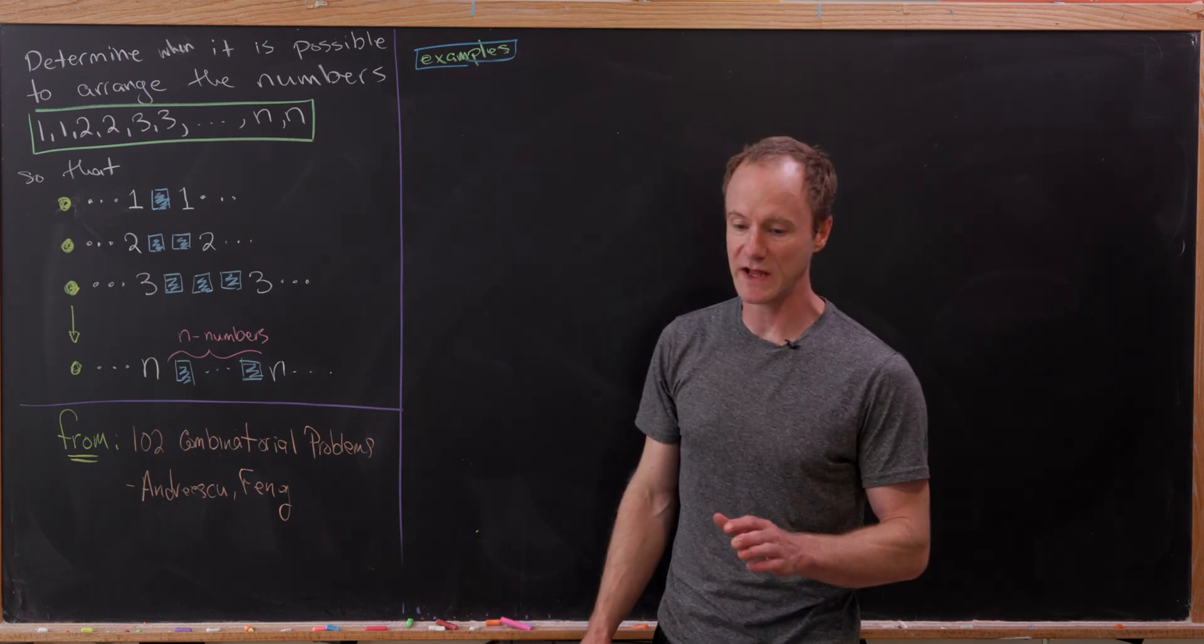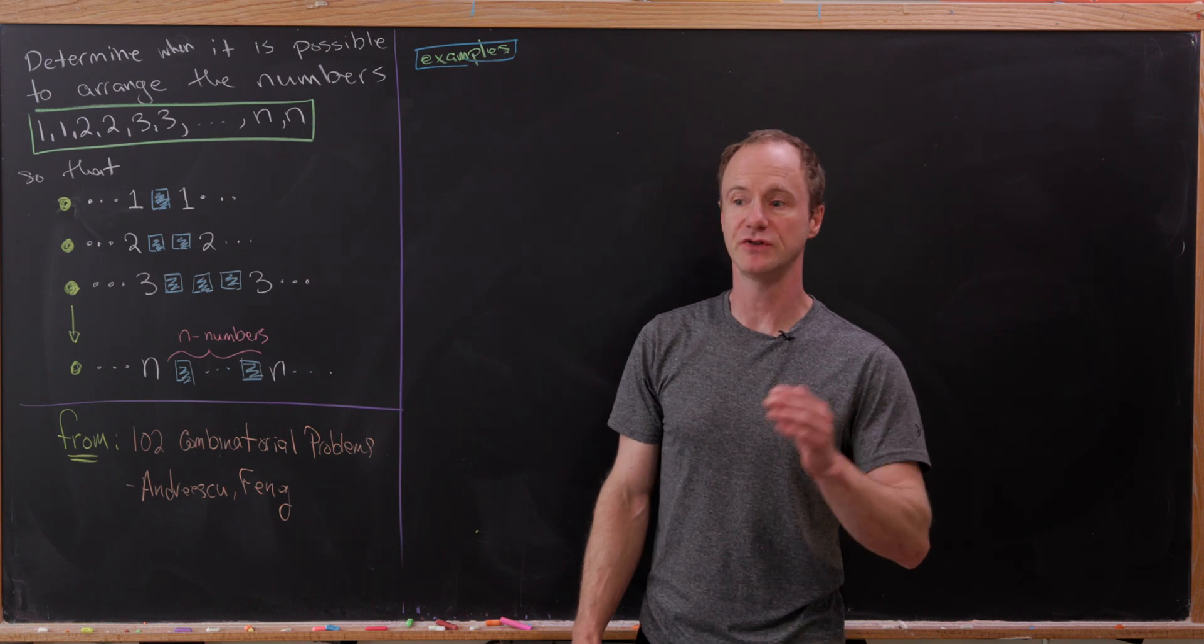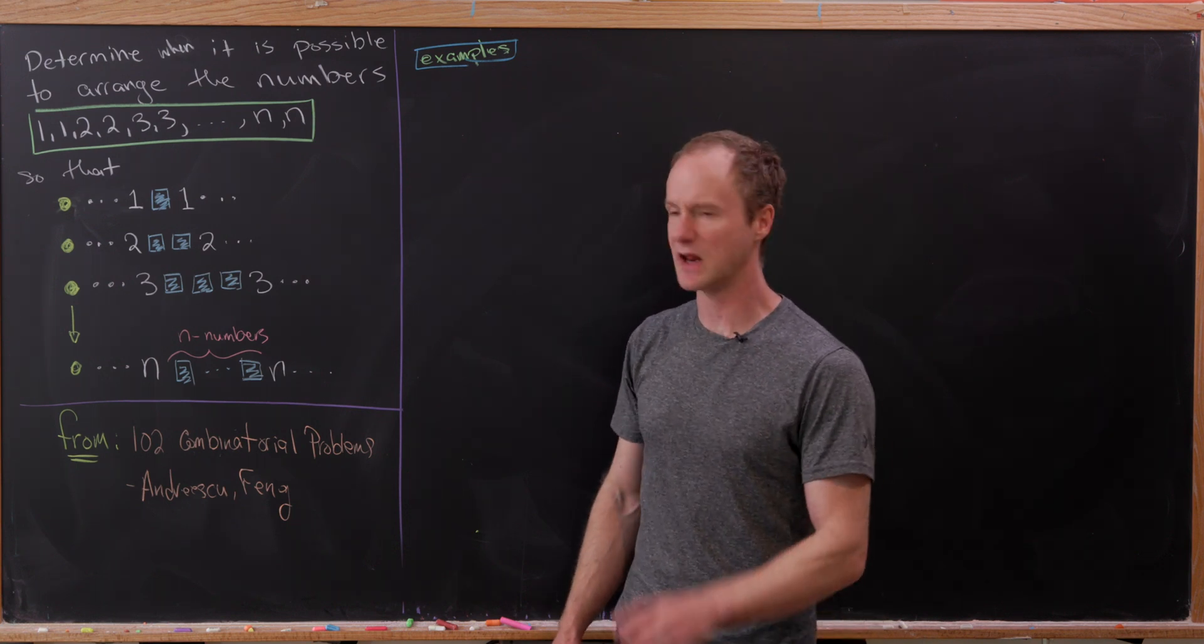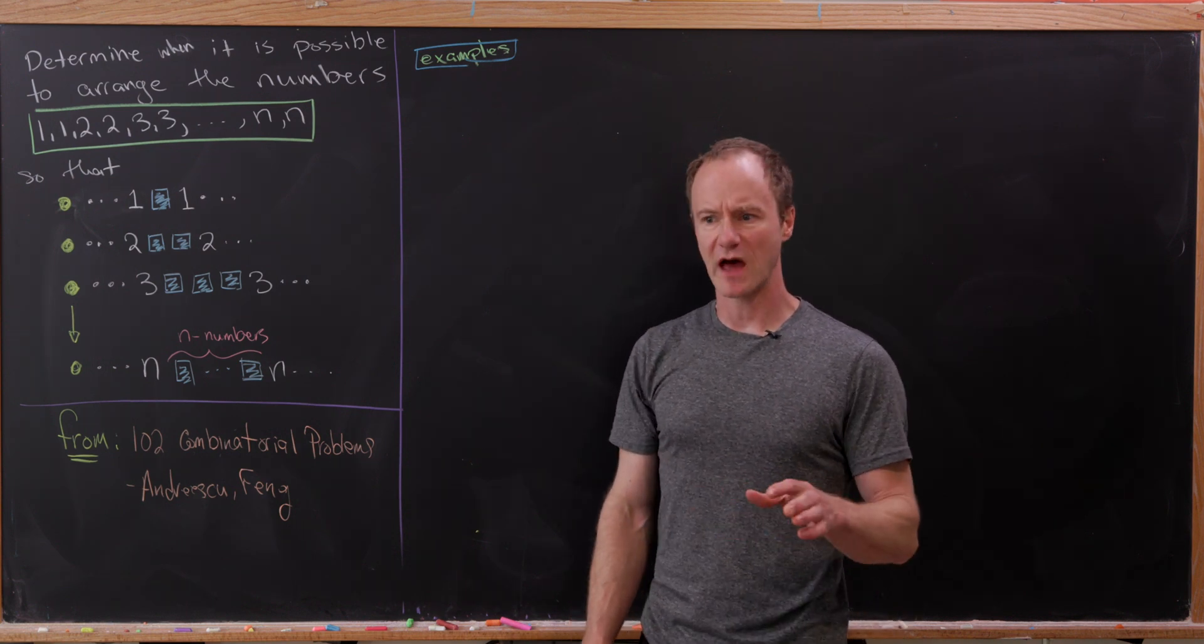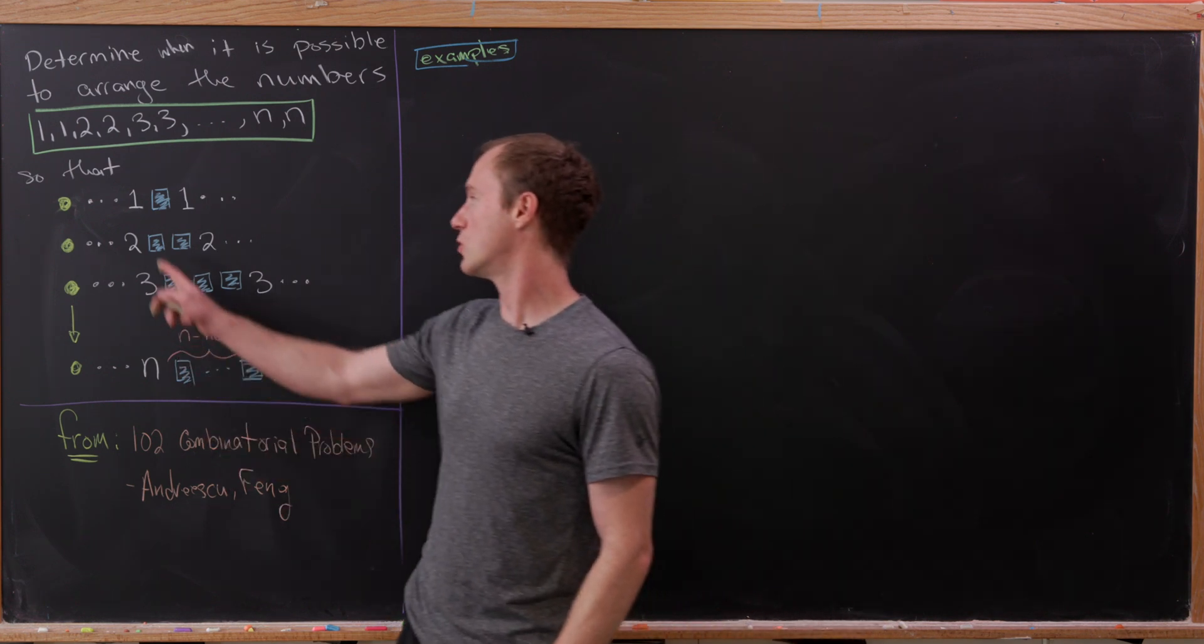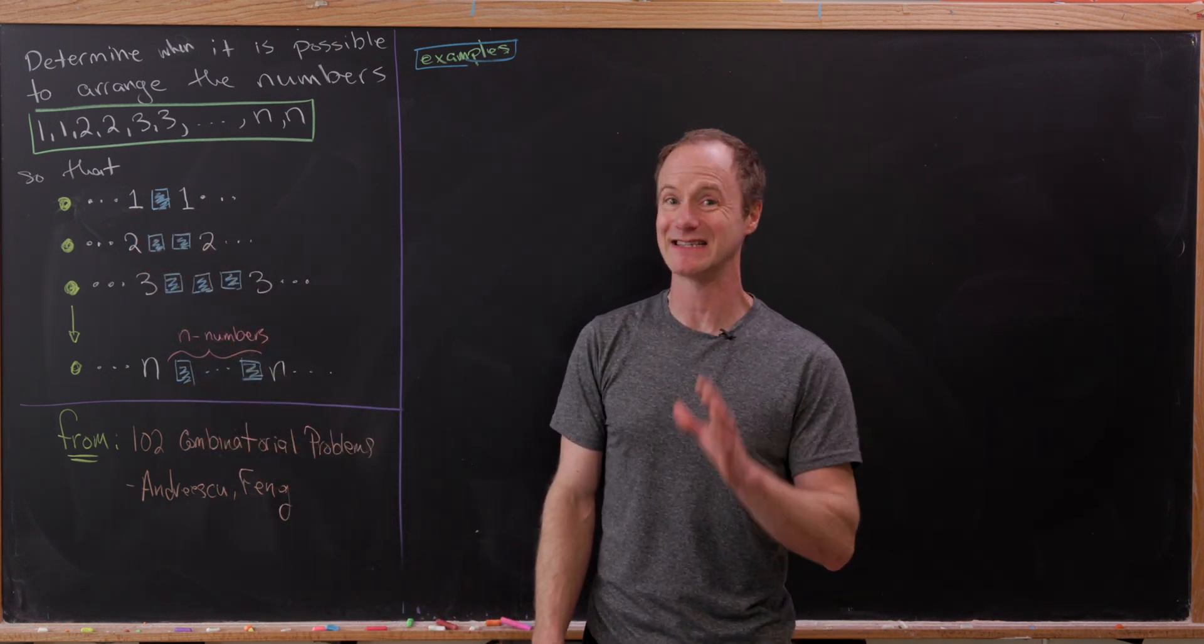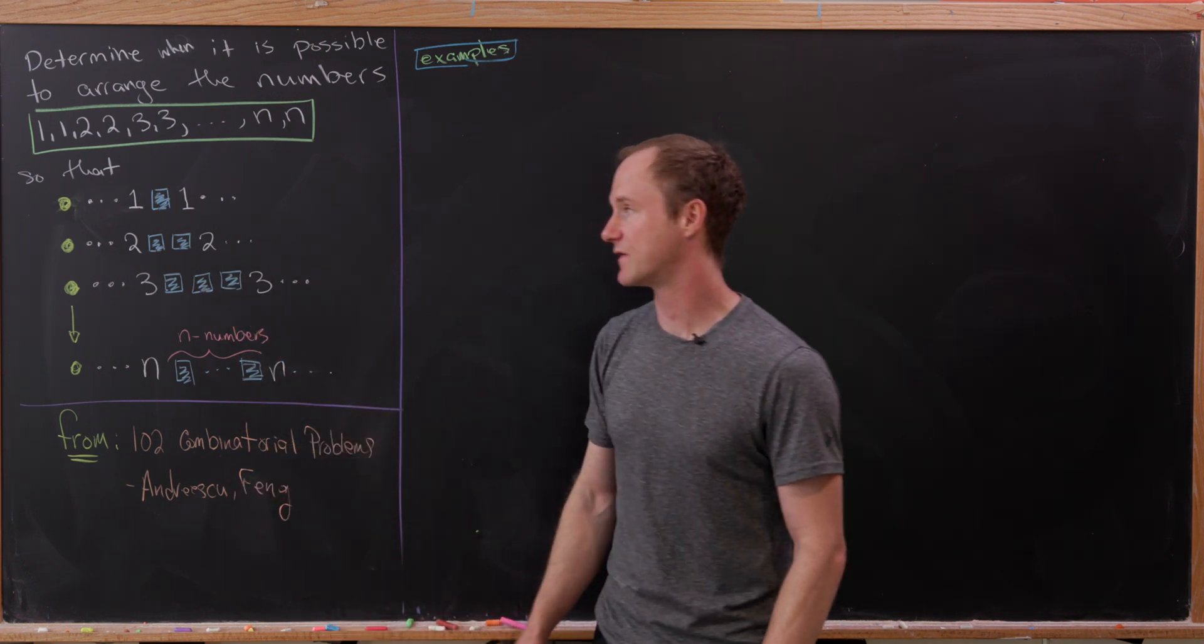Our goal is to determine when it is possible to arrange the numbers 1, 1, 2, 2, 3, 3, 4, 4, all the way up to N, N. In other words, two copies of the numbers 1 through N, so that we have the following N conditions. Between the two appearances of the number 1, there is a single number.